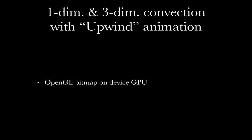Here I want to present OpenGL bitmap animations, one-dimensional and three-dimensional convection due to mass conservation using this upwind method. I want to say that I use OpenGL, and it's a pointer that points to a place in the bitmap. CUDA C/C++ provides a function that links it directly to a pointer on CUDA C/C++ on the device GPU. Another thing I want to emphasize is that this is completely rendered on device GPU. The CPU is not used at all in rendering this animation in real time.